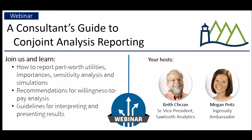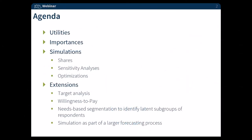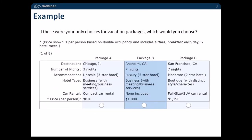We are going to cover utilities, importances, and simulations, and some really cool things you can do with those simulations. Then Keith is going to cover some extensions of conjoint analysis reporting. To level set everybody, we are going to look at a choice-based conjoint exercise that asks respondents about different vacation packages. In this example, we have three different concepts with a destination, a different number of nights, different types of accommodations, and hotel types. People are asked to choose which they would prefer, and they do this eight times over.